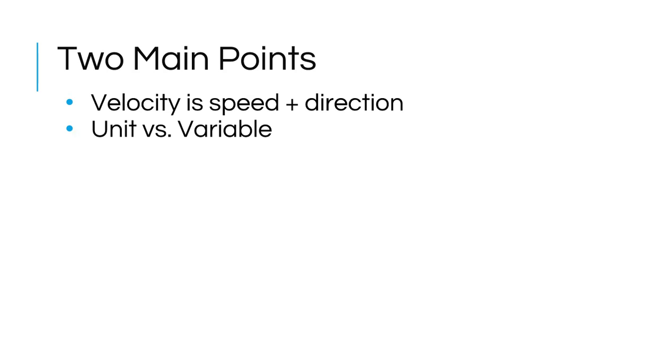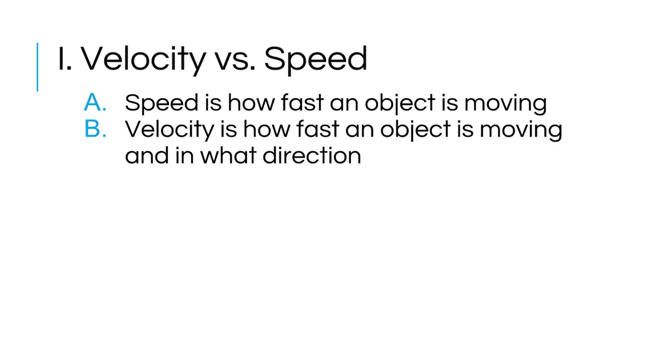The first part is velocity compared to speed. Speed is how fast an object is moving, but velocity is how fast an object is moving and in what direction it's moving. That is the description of velocity. If you haven't written this down yet, go ahead and do that, and if you need to pause the video, please do.